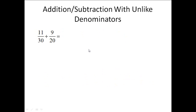When we have unlike denominators, we first need to find our LCD, which is our least common denominator. To find it, we need to factor our numbers. So 30 could break down into 3 and 10. The 3 is prime, and the 10 breaks down into 2 and 5, so 30 factors into 3, 2, and 5.